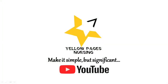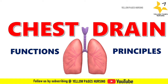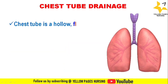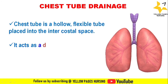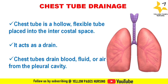Welcome to Yellow Pages Nursing. In today's video we will be discussing the functions and principles of chest drain. A chest tube is a hollow flexible tube placed into the intercostal space which acts as a drain. Chest tubes are inserted in order to drain blood, fluid, air, etc. from the pleural cavity.